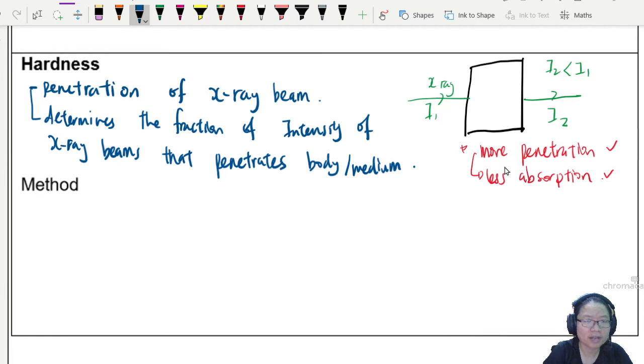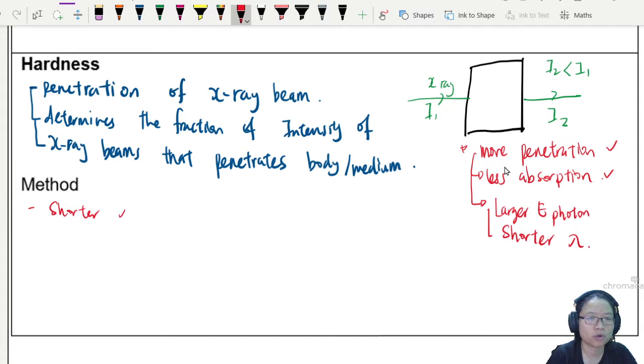More penetration means larger energy of photon, meaning that we are talking about shorter wavelength. So basically, now what we want to do is we want to create X-ray of short wavelength. Shorter wavelength of X-ray photon means greater penetration. Shorter means penetrate more.